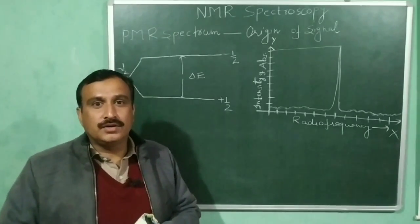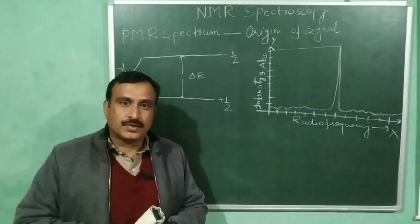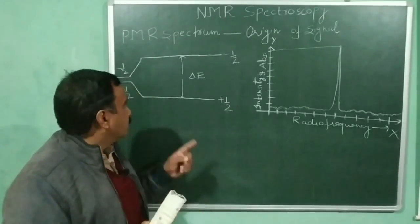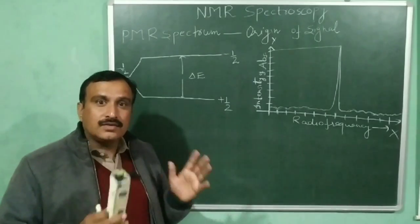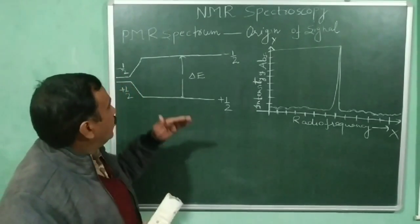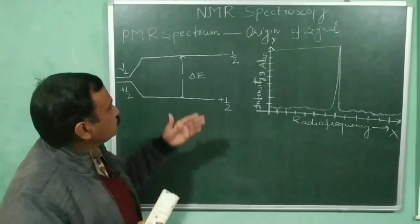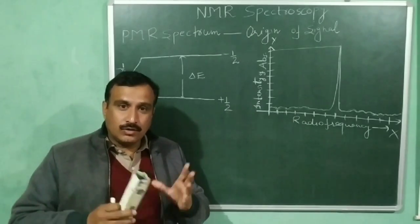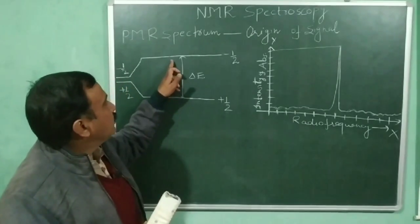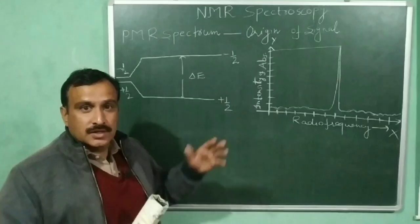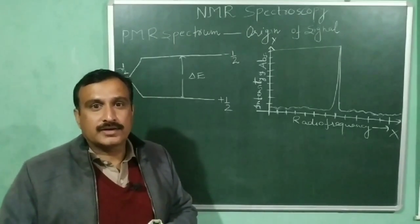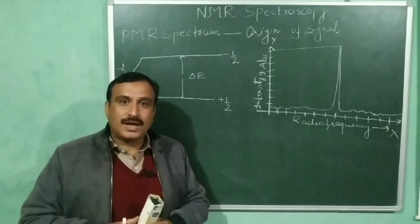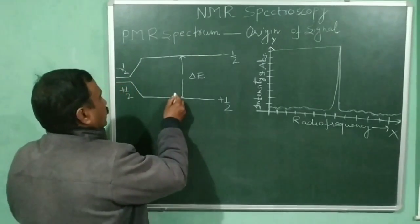This degeneracy is lifted when we apply an external magnetic field. After the application of the external magnetic field, we get a lower energy state called the alpha spin state or plus half, and another of higher energy called the beta spin state or minus half. The energy difference between these two states increases with increase in the strength of the external magnetic field, and the proton will preferably occupy the lower energy state.